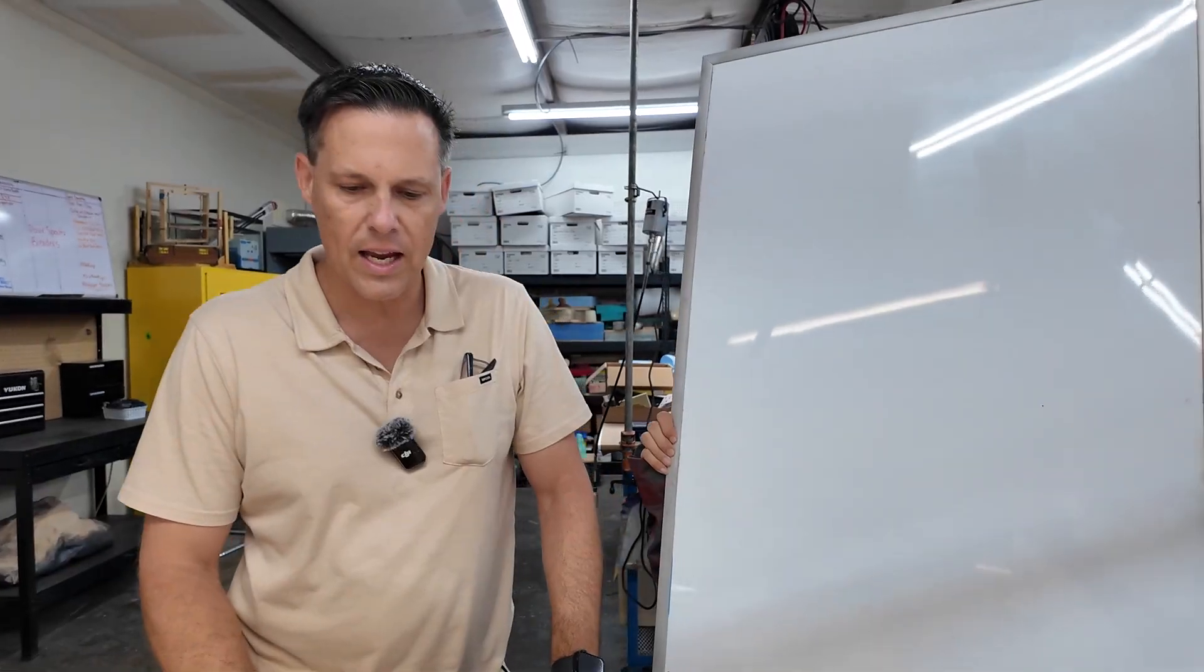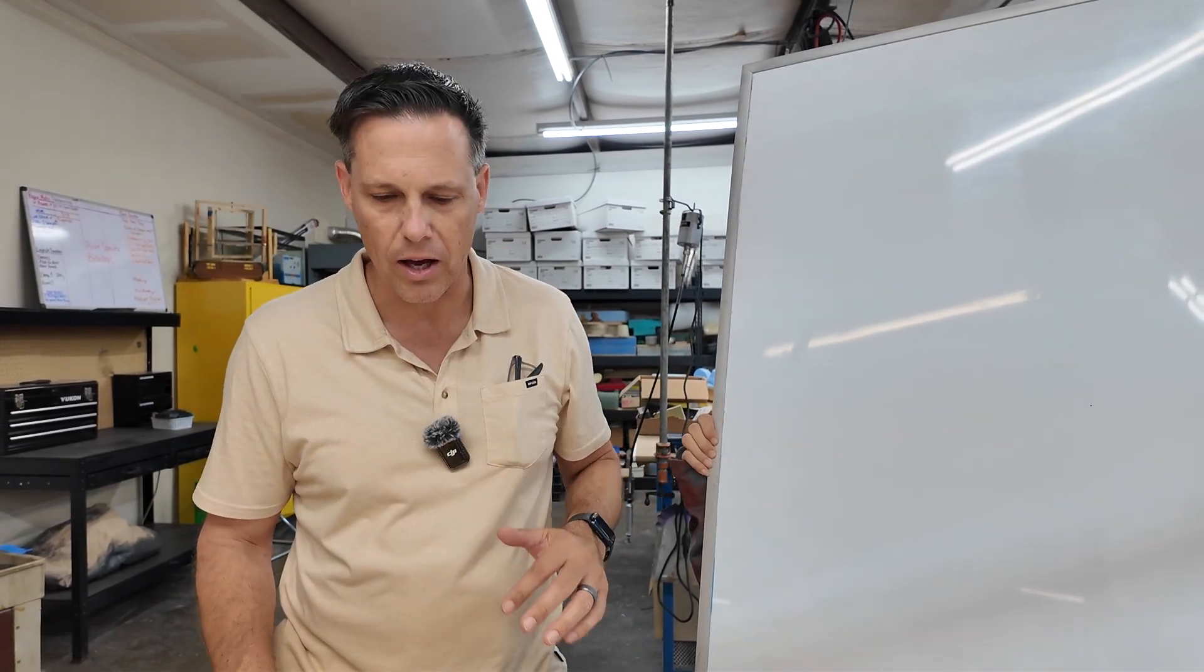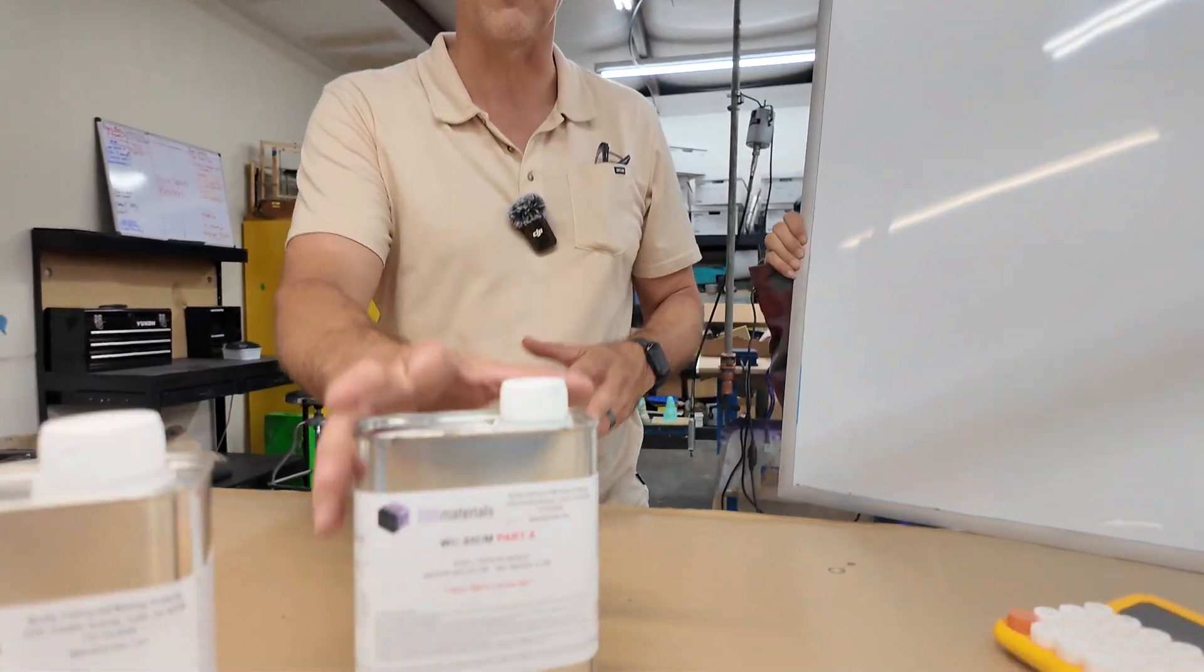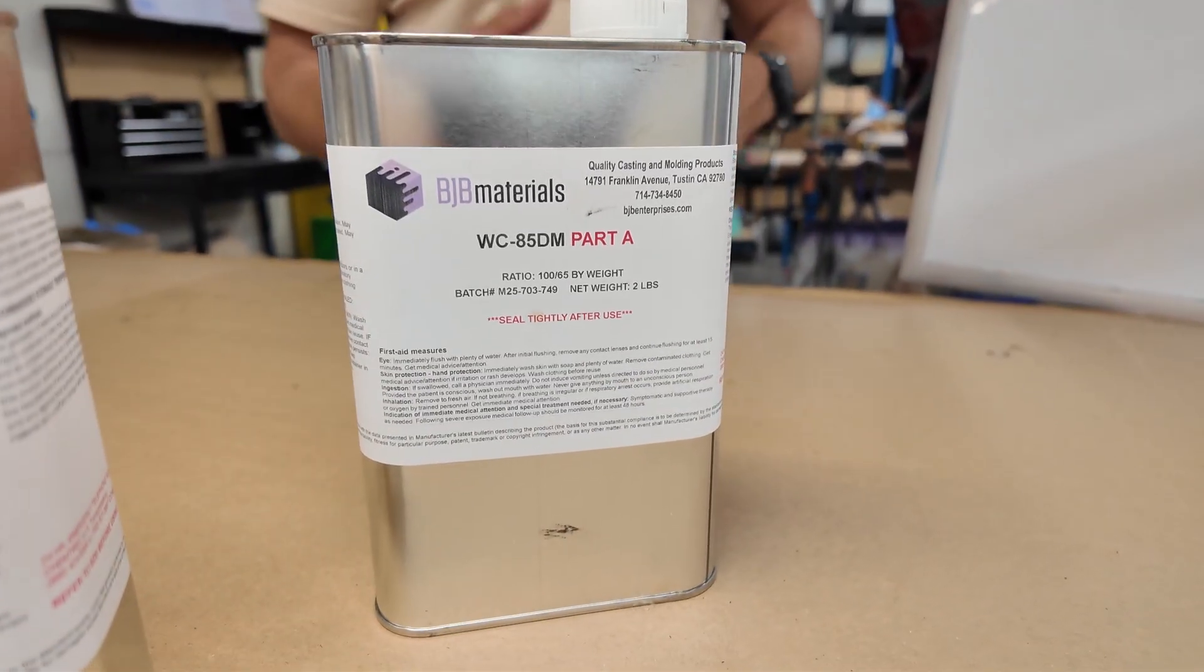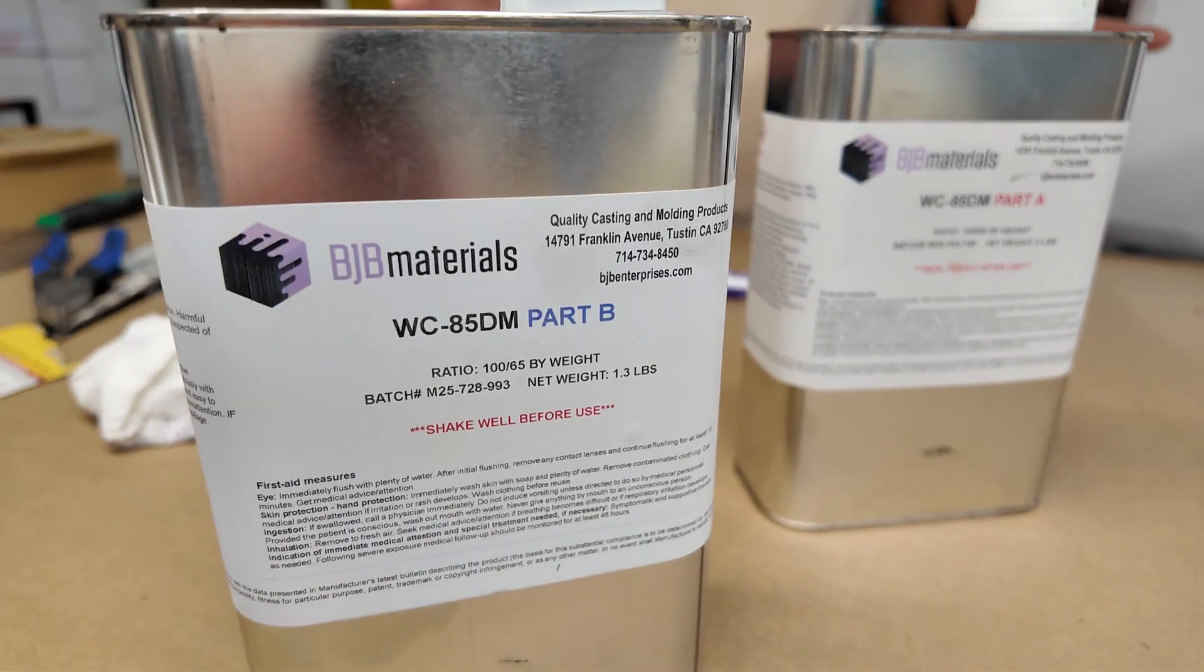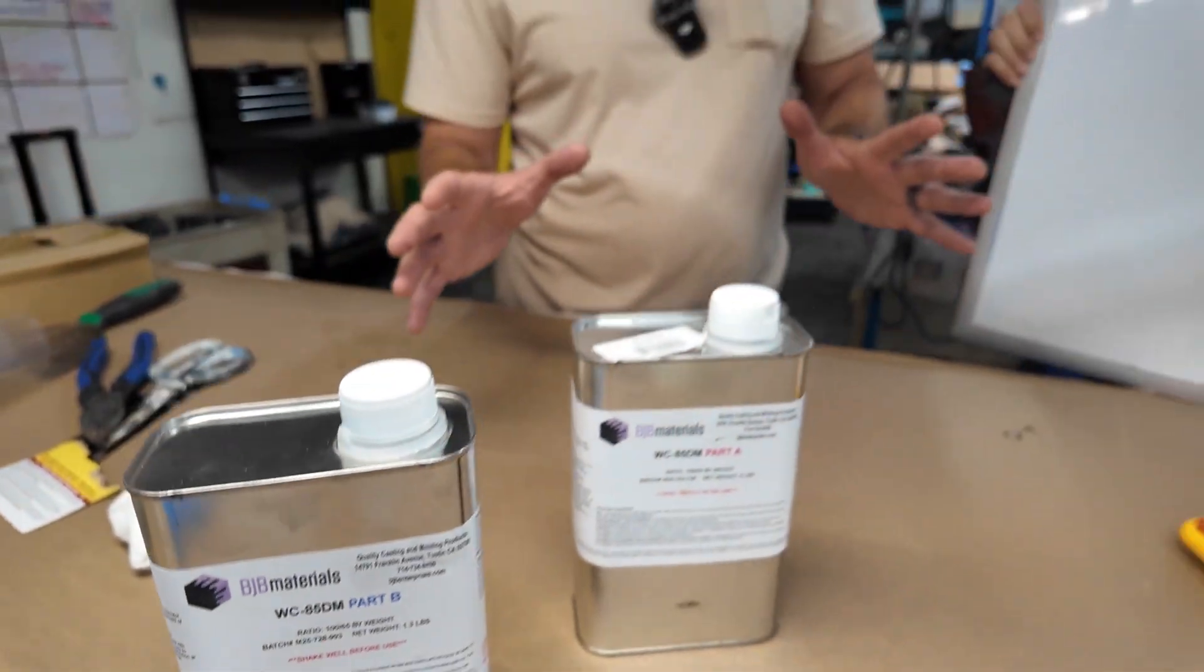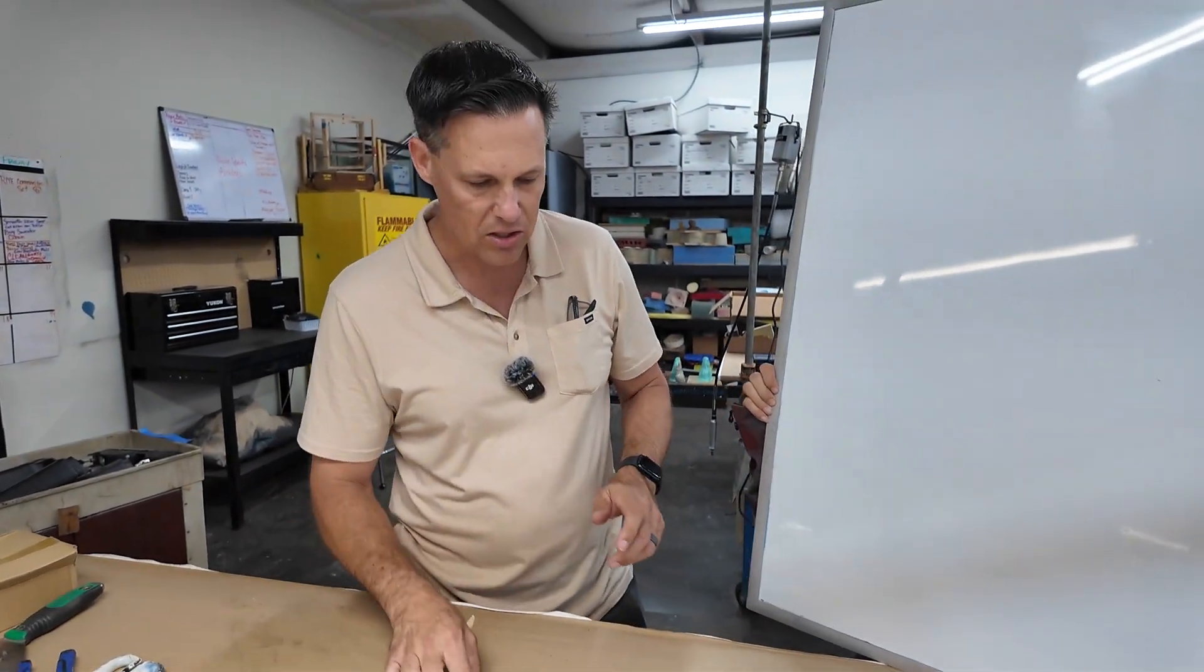Some BJB products that are one-to-one ratio are really simple to calculate the components. But when you're dealing with materials like this water clear resin, things can get complicated. We all wish everything was one-to-one. That would be a perfect world. One-to-one and two-to-one are usually the easiest. But we have other formulations that are 100 to 65, 100 to 75, 100 to 80, 90, all those things. But the calculation is still done basically the same way.